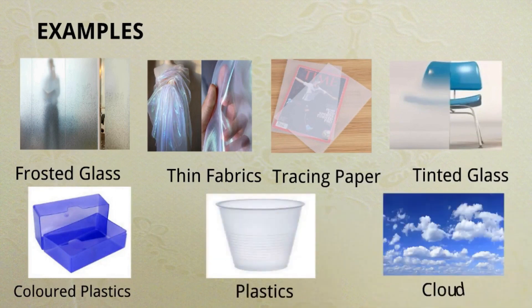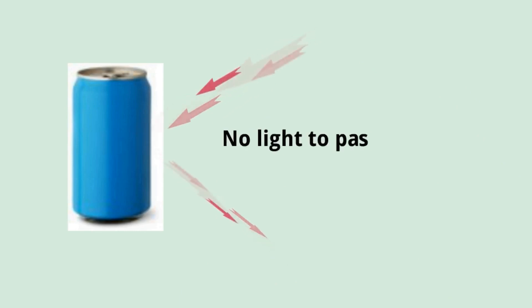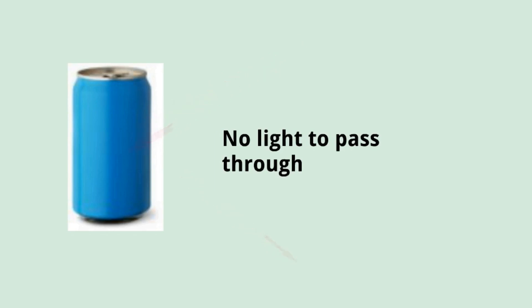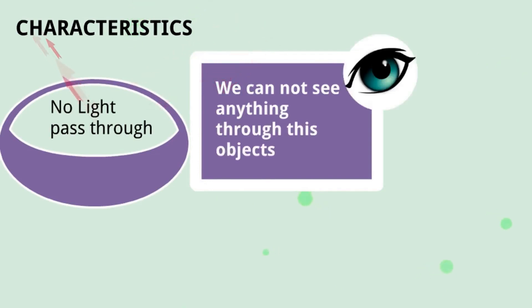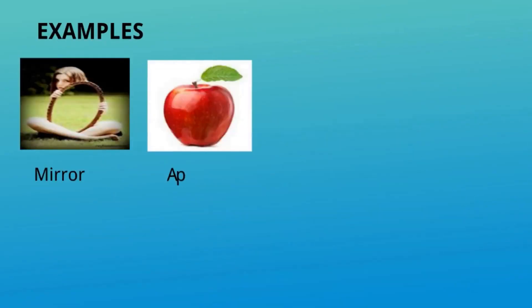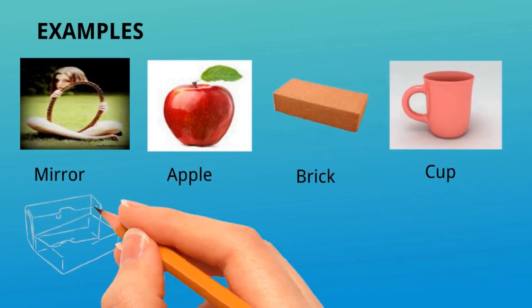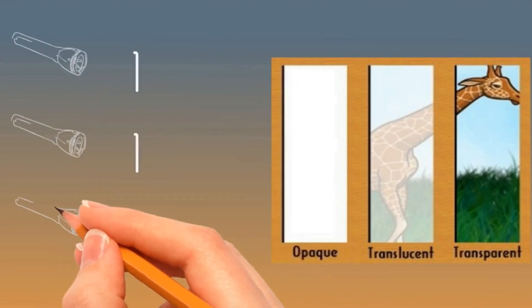For opaque objects: consider a can — light falls on it, some is absorbed and some is reflected, but no light passes through. This is an opaque object. Characteristics: no light passes through, light may be reflected or absorbed, we cannot see anything through these objects, and since light is obstructed completely, a dark shadow is formed. Examples: mirror, apple, brick, cup, stone, and can.